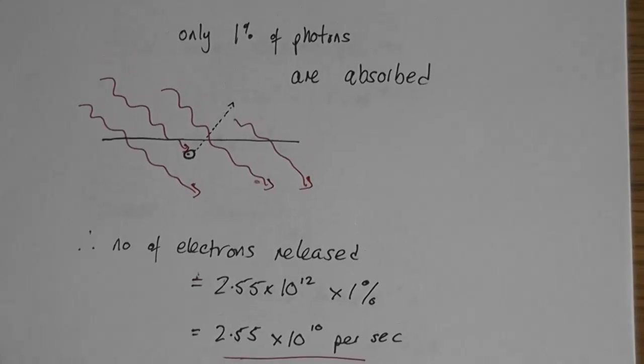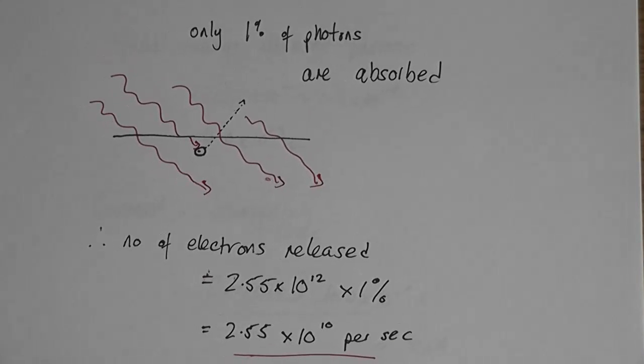I also know that 1% of the photons are absorbed. The rest of the photons just travel straight through. I've drawn a little picture there, you can see most of the photons go straight through. 1% are absorbed by an electron and the electron is emitted.